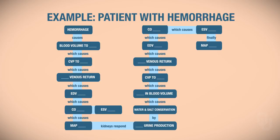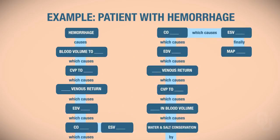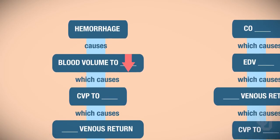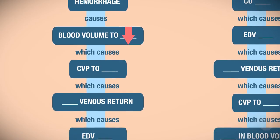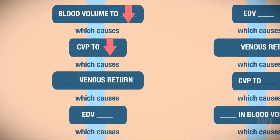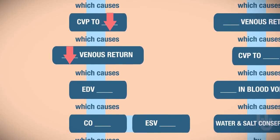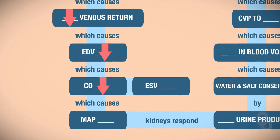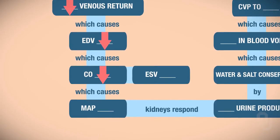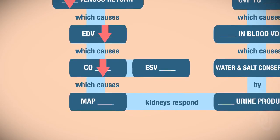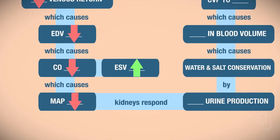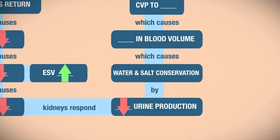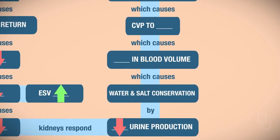If you hemorrhage, your blood volume is going to go down — you've lost a large component of your blood volume. With less blood volume, your central venous pressure goes down. When that pressure goes down, there's less venous return, which causes your end diastolic volume to go down, which causes your cardiac output to go down as well. If cardiac output goes down, you're ejecting less blood, so your end systolic volume should be high. If cardiac output goes down, MAP goes down too. Now the kidneys need to respond, so they respond by producing less urine — conserving water and salt.